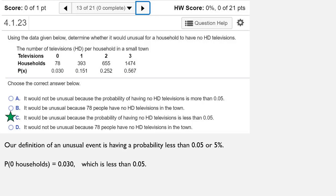That would be unusual because the probability of having no HD televisions would only be 3%, which is less than 5%.